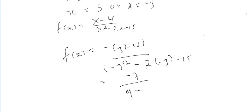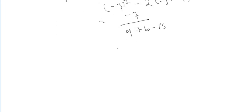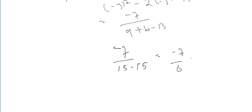When x = -3, the denominator becomes: (-3)² - 2(-3) - 15 = 9 + 6 - 15 = 0. So the function becomes -7 over 0, which is undefined. Therefore the function is undefined at x = -3.